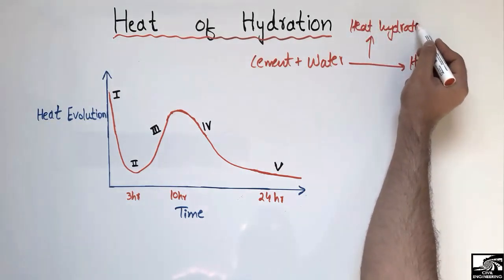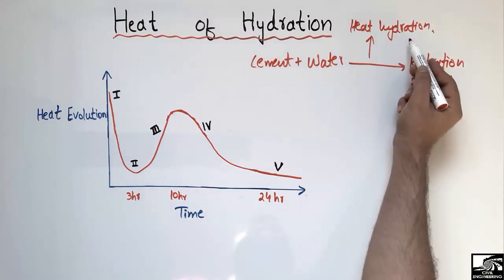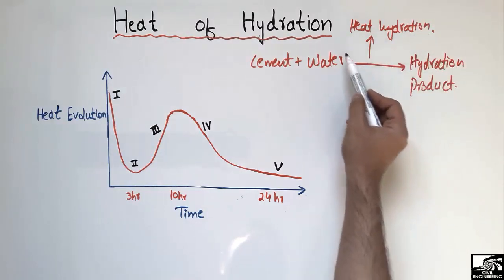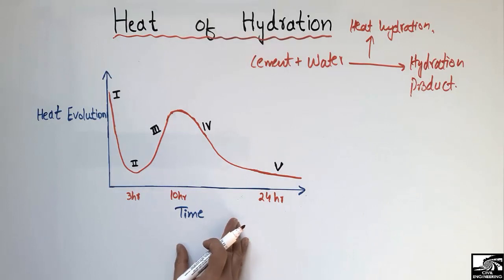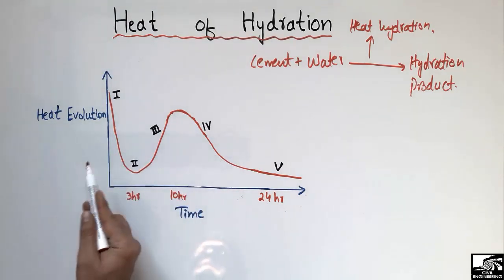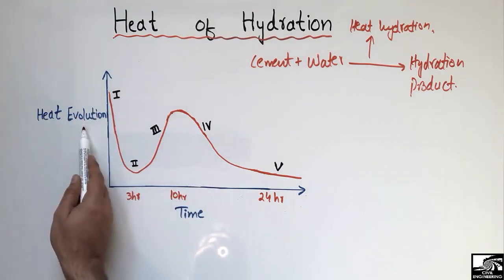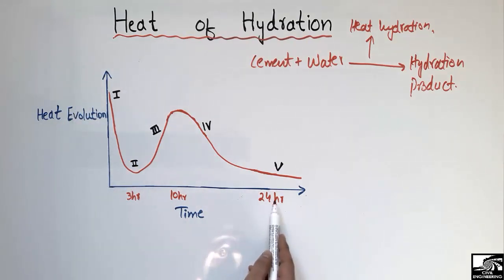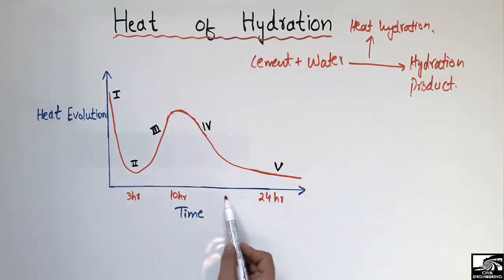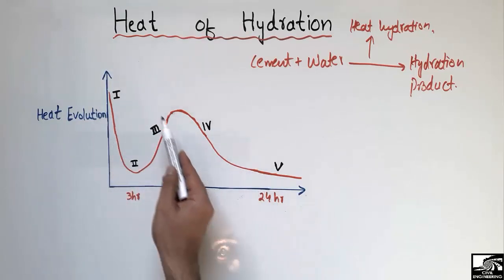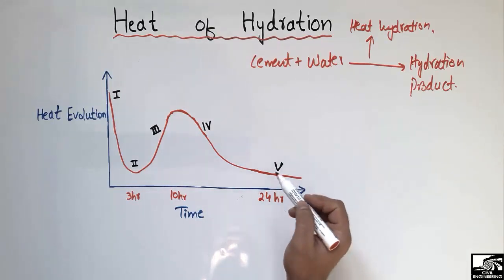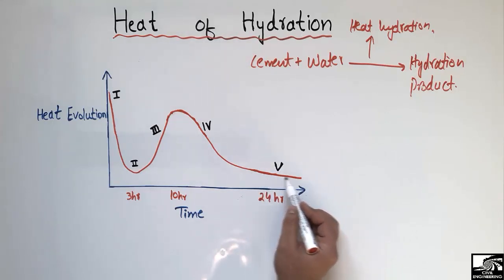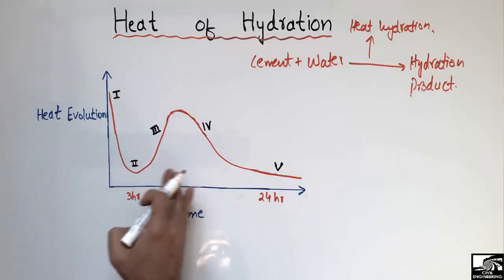This is called an exothermic process, or the heat of hydration, because heat is released during this process — released due to the hydration process between the cement and water producing hydration products. Now, the heat of hydration has been plotted with heat evolution on the y-axis and time on the x-axis. With time, the heat evolution changes within the cement — there is quite a variation, but after one day (24 hours) it becomes constant.